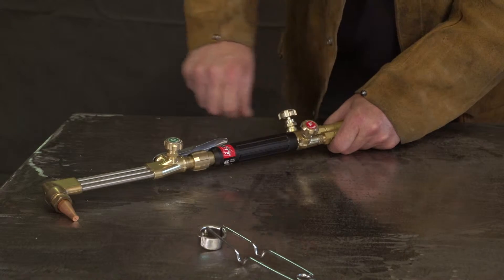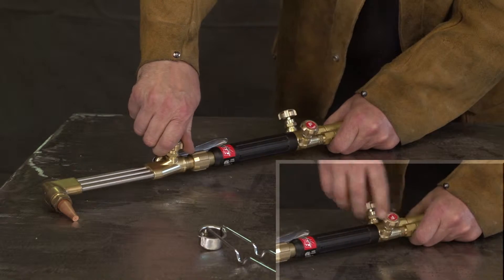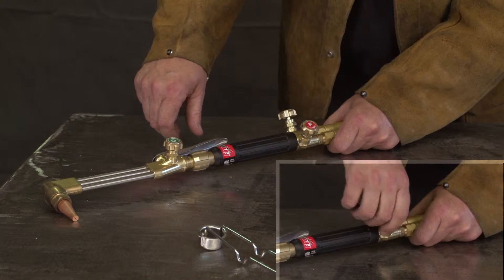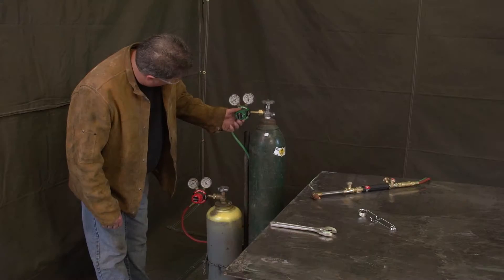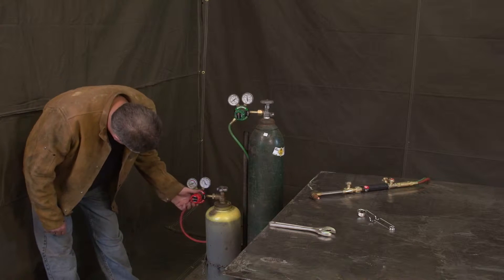Purge the oxygen and acetylene lines by opening the torch valves for 5 to 10 seconds. Close the valves, double-check regulator pressure, and adjust if necessary.